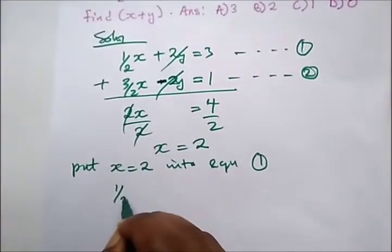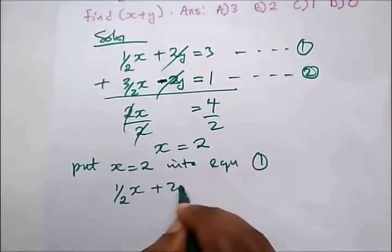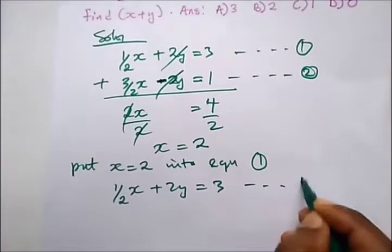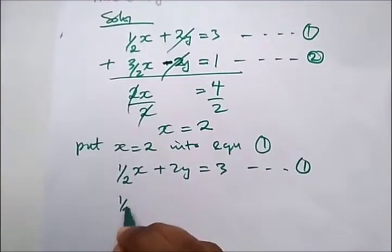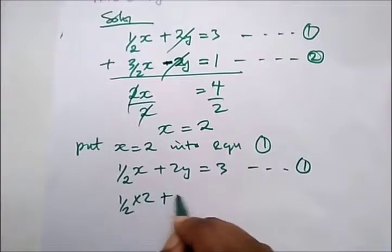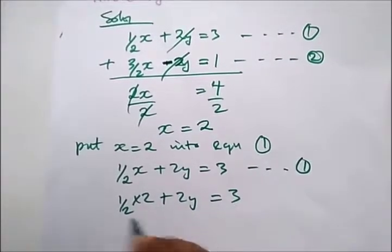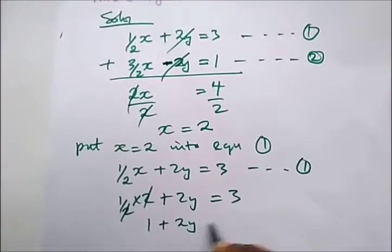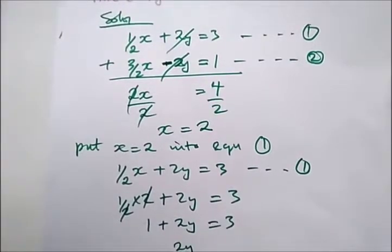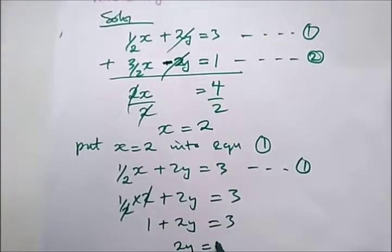So we have 1 over 2x plus 2y equals 3. This is equation 1. So this will cancel this. So we're left with 1 plus 2y equals 3.